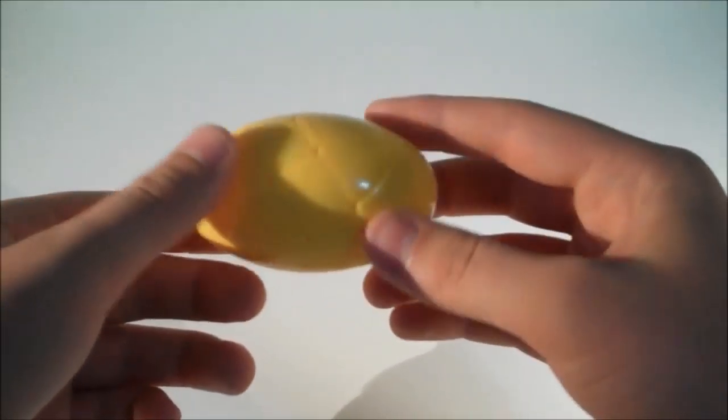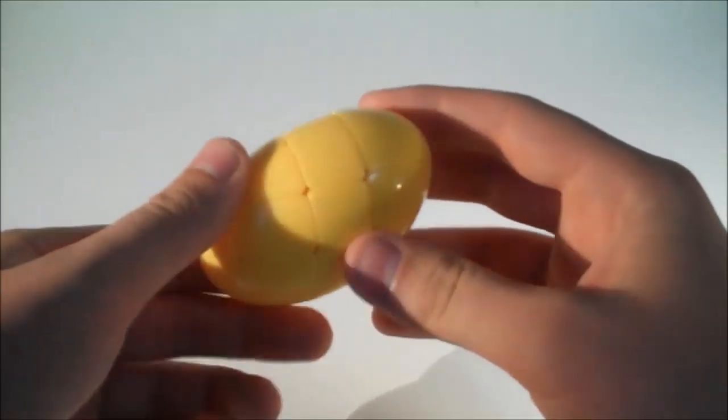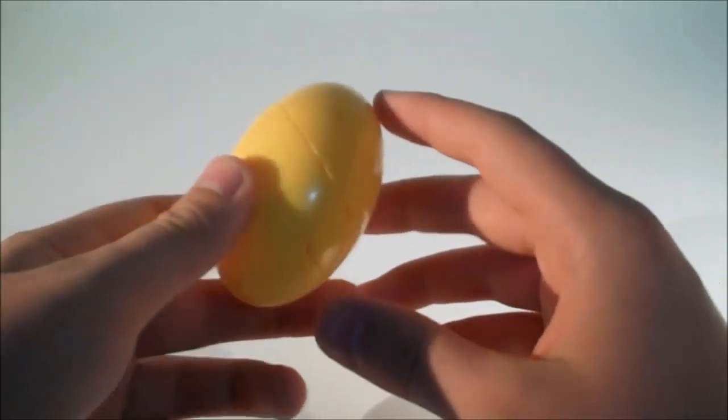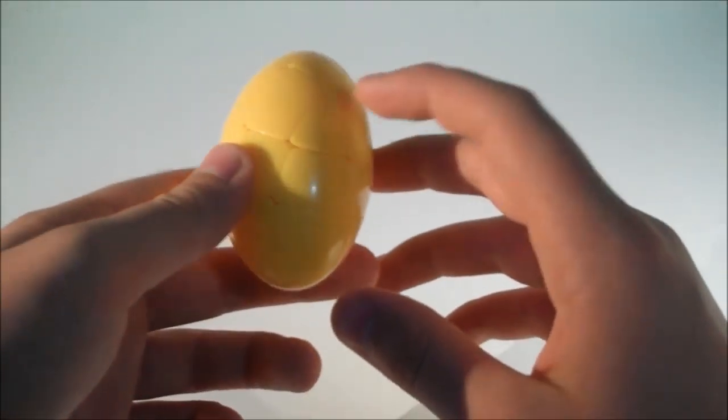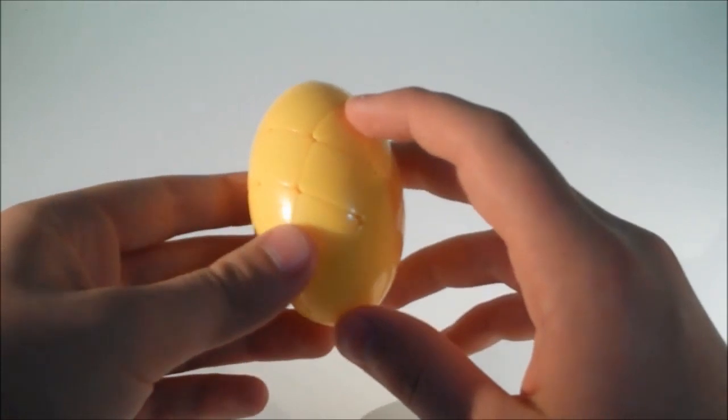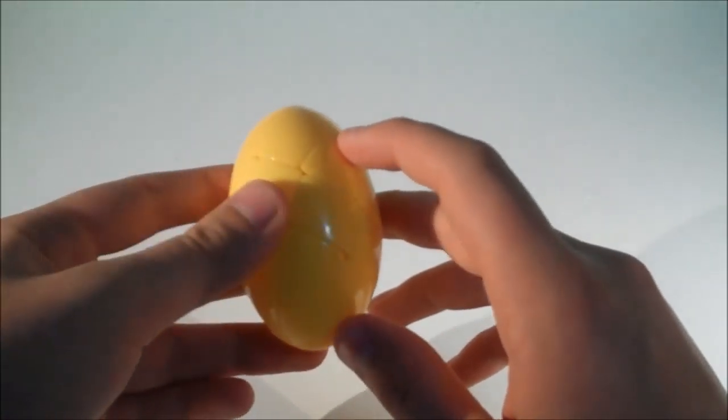This is the 3x3 egg. So this cube is just the 3x3 shape mod. So you solve it just like a 3x3. So what's difficult about this puzzle?